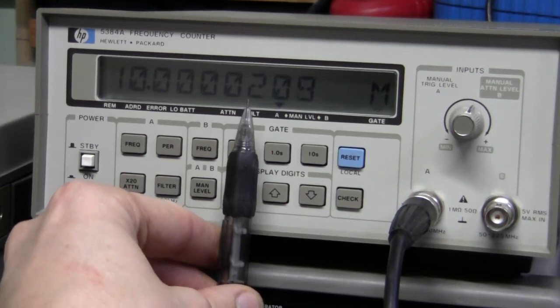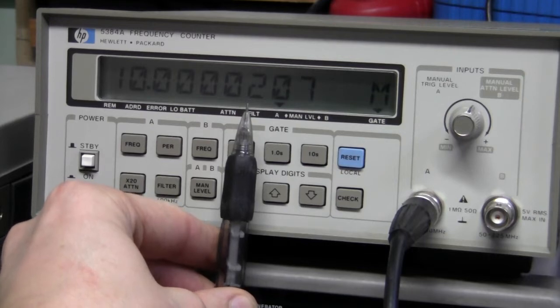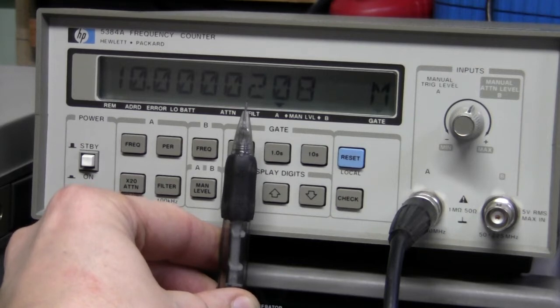So according to my counter, this guy is 2 ppm higher. And considering that counter is not calibrated and oscillator is promised to be within plus minus 1 ppm, this is pretty good result.